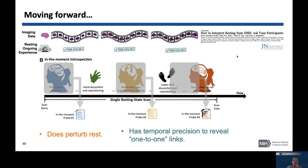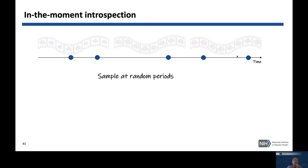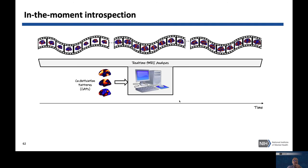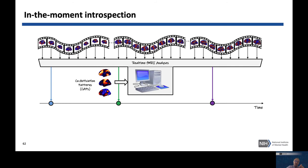In-the-moment introspection was the avenue we were planning to pursue in our lab, but the pandemic significantly slowed our progress. One approach is random sampling, but aggregating data from different brain configurations is complicated. Real-time fMRI may be our friend here — using templates like coactivation patterns, we can check each new TR to see if the brain resembles one of these patterns, and only at those particular moments prompt subjects with introspective questions.